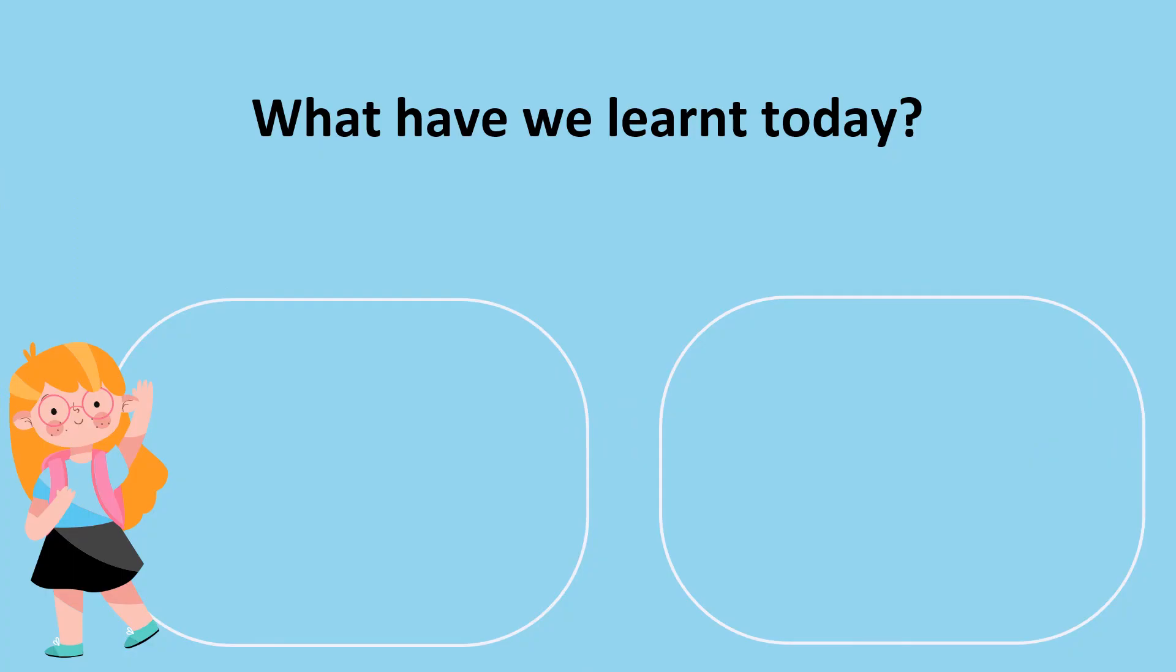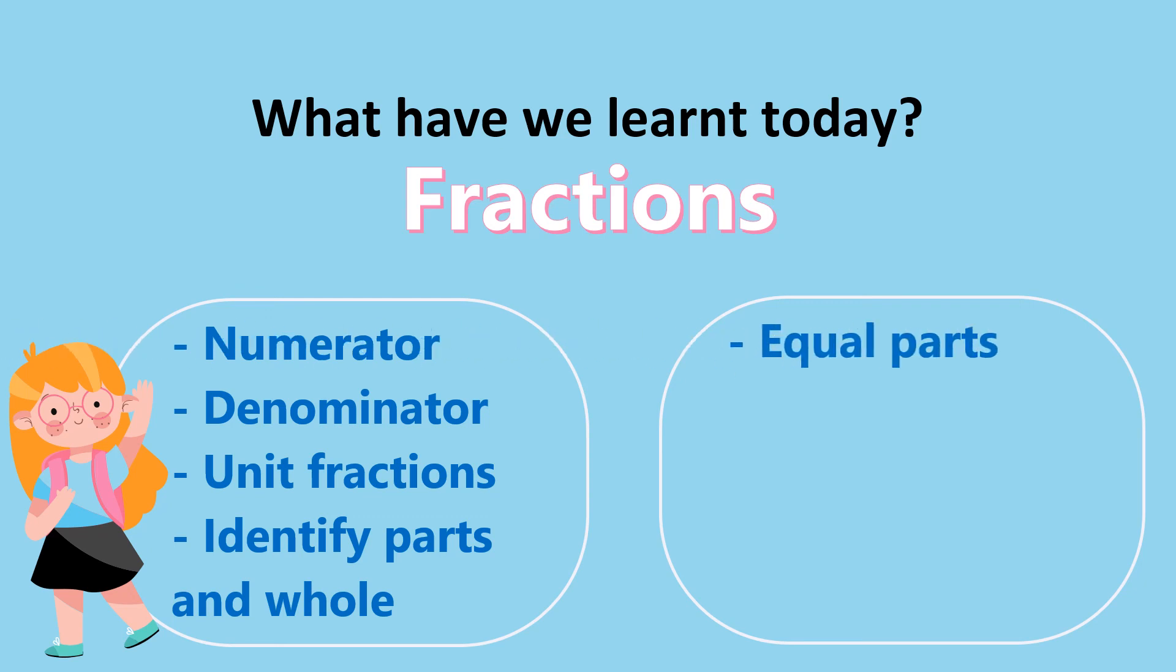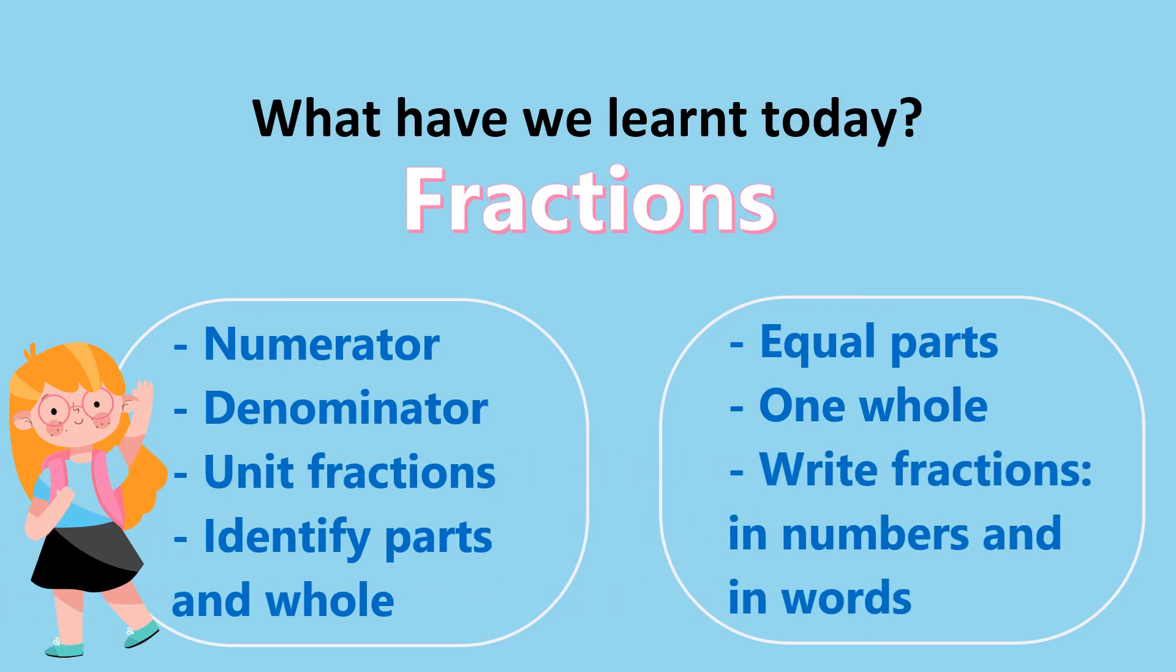So let's summarize what we have learned today. What was our main topic? It was fractions. What about fractions? The number on top is called the numerator. The number at the bottom is called denominator. We also talked about if the fraction has one as its numerator, it's called unit fractions. We identified parts and wholes. We also talked about equal parts. Fractions only apply on equal parts. We also talked about one whole. If the whole parts are shaded or colored, then we say it's one whole. We also learned how to write fractions in numbers as well as in words.